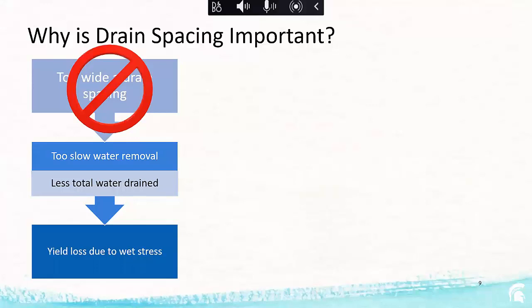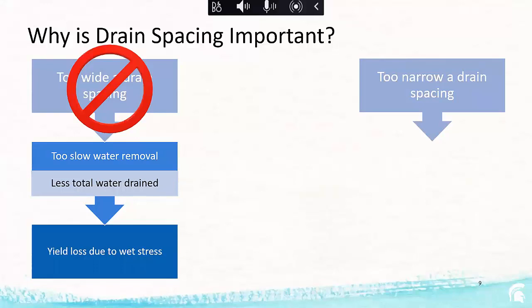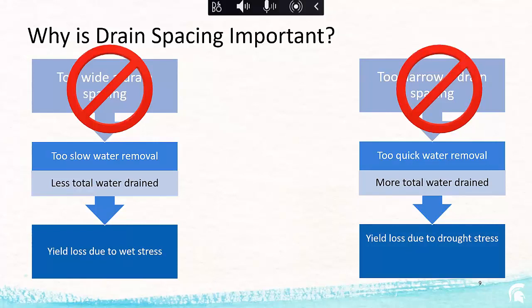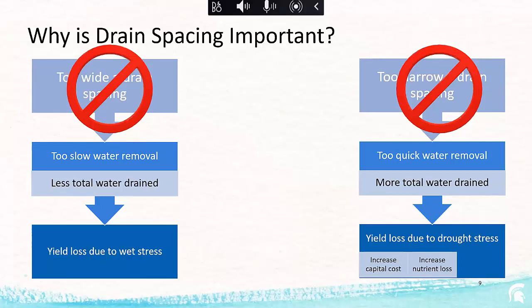On the other hand, if you have a drain spacing that's too narrow, that's going to remove water too quickly — more water than necessary will be drained. You don't want that either, because draining the soil too fast won't leave enough water for the crop, leading to drought stress and crop yield loss. It also increases capital costs, increases nutrient loss — which hurts water quality — and increases peak flow.